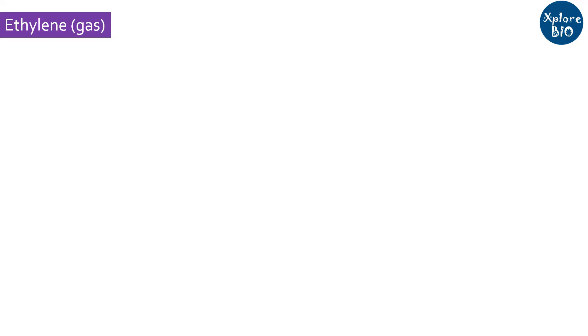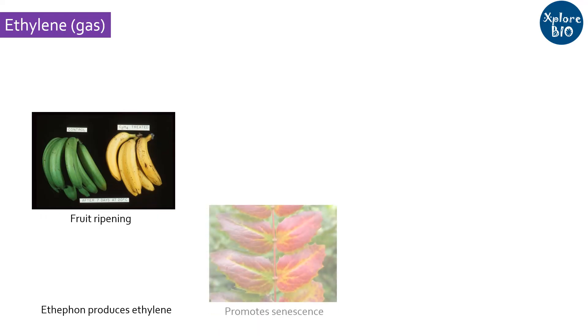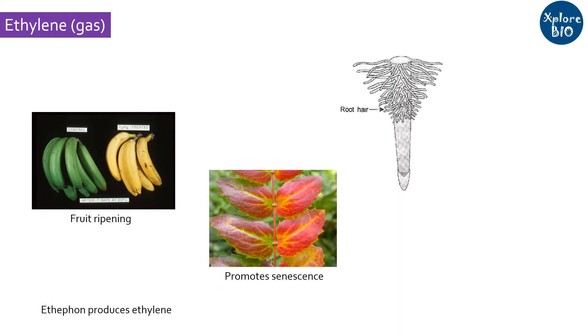The fourth PGR is ethylene. It is unique in the sense that it is gaseous in nature. It increases the respiration rate and is well known for its role in promoting fruit ripening. Commercially, it is used to ripen fruits like bananas and mangoes. It also promotes senescence and root hair formation, and leads to lateral growth of the plant.